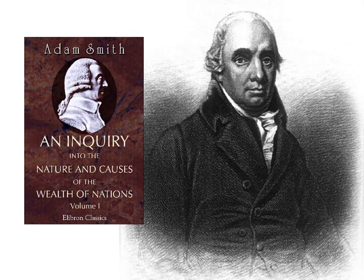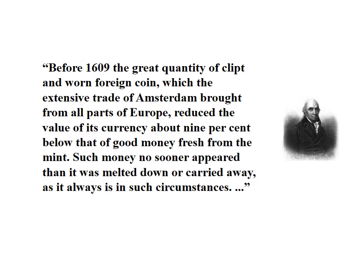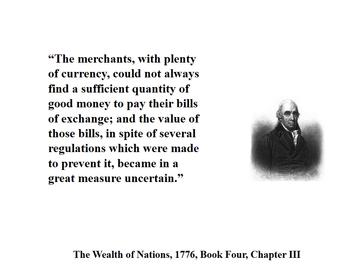From the great Scottish political economist and moral philosopher Adam Smith, we learn of the chaotic conditions existing before the Bank of Amsterdam was established. Smith wrote: Before 1609, the great quantity of clipped and worn foreign coin, which the extensive trade of Amsterdam brought from all parts of Europe, reduced the value of its currency about 9% below that of good money fresh from the mint. Such money no sooner appeared than it was melted down or carried away, as it always is in such circumstances. The merchants, with plenty of currency, could not always find a sufficient quantity of good money to pay their bills of exchange, and the value of those bills, in spite of several regulations which were meant to prevent it, became in a great measure uncertain.